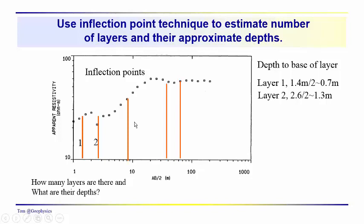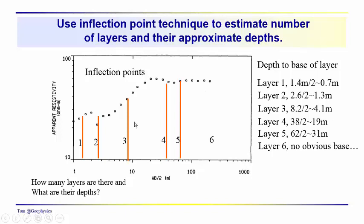Divide that by 2, we get 1.3. Point 8.2 meters divided by 2 is 4.1. The next inflection point, we're out here 20, 30, 40, about 38. 38 divided by 2 is 19. And the fifth layer, the base depth to the base of the fifth layer, 60, approximately 31. Again, we're kind of drawing a line and saying well the variations that we see here aren't really significant enough for us to put in an additional layer. So later on you might consider doing that, but we have a basic model at this point.